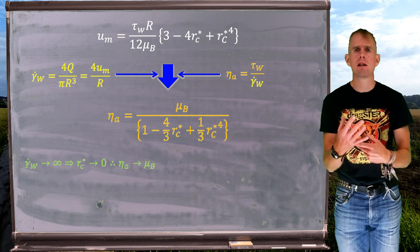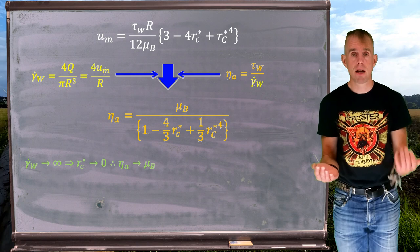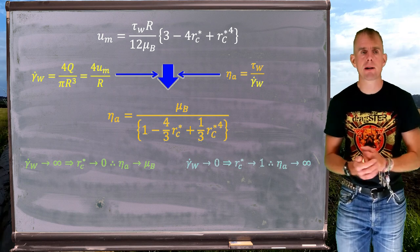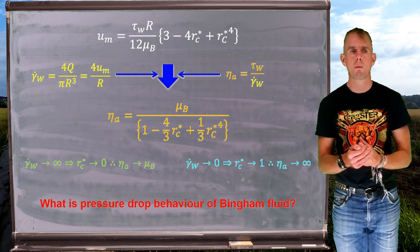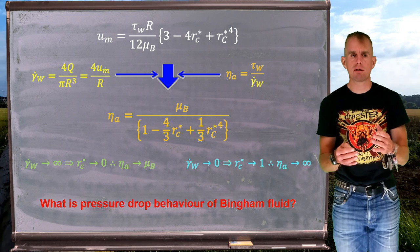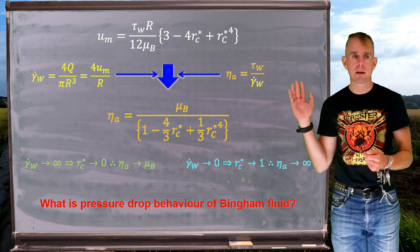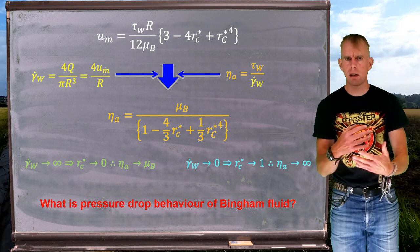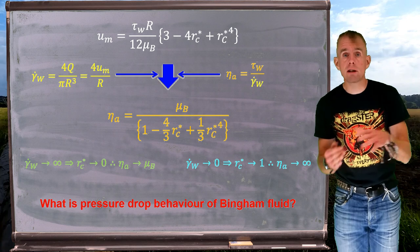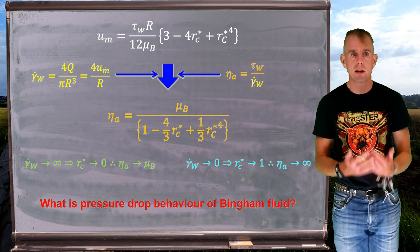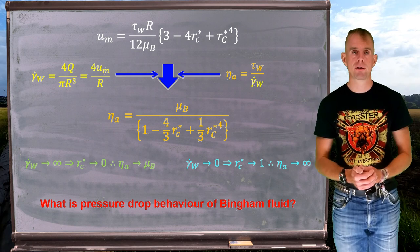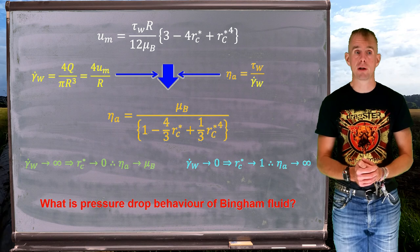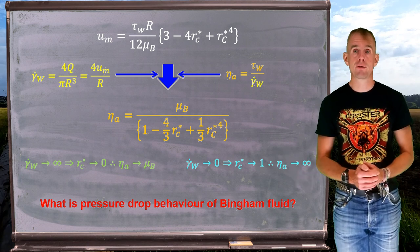At very high shear rates, we've effectively got an entirely yielded material, and once yielded the material flows with Newtonian behaviour, so we would expect this result. As R_C* tends to 1, γ̇_w the wall shear rate tends to 0, and we end up with an expression in the denominator that sends my apparent viscosity off to infinity — effectively we have a solid, which is the analogous expression of saying we have an unyielded material.